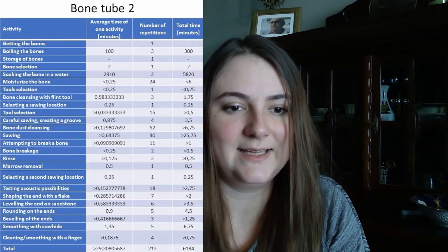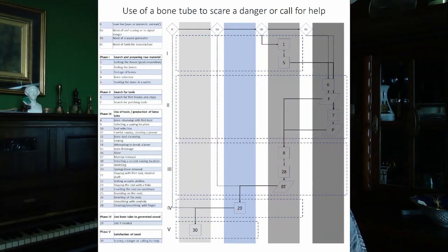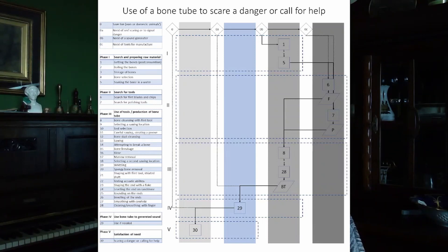As the next point of my analysis, I present a cognigram that illustrates the chain of operation. The cognigram is based on the assumption that the bone tube was used as a simple communication tool — for example, to warn of danger. Of course, sound generators could have had different functions.